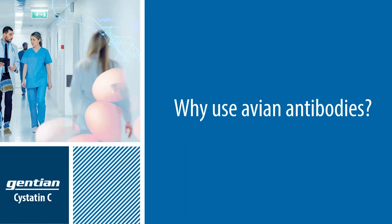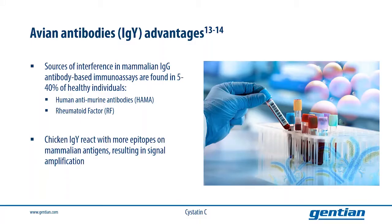With that, we now move on to a question that pertains specifically to Gentian's turbidometric CYSTATIN-C assay: why use avian antibodies? Human anti-animal antibodies, human anti-murine antibodies, and rheumatoid factor are a major source of interference in mammalian IgG antibody-based immunoassays.